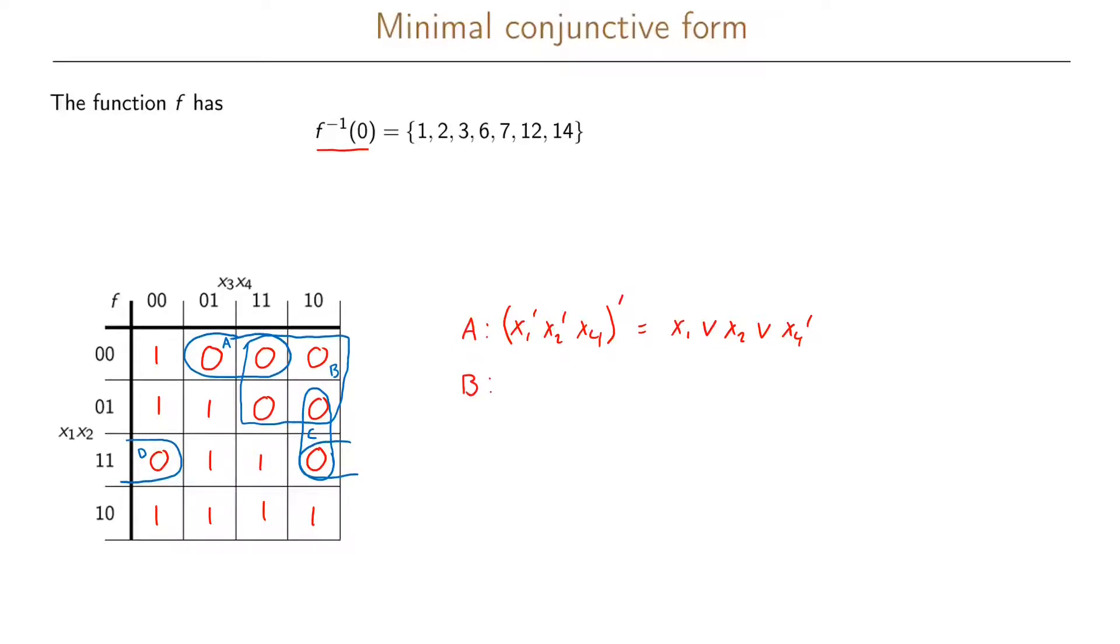Then for our next dual of an implicant we will have B which is x1 prime, x3. And again since we have a zero in our Karnaugh map we have a prime here. So this can be written using De Morgan's law as x1 or x3 prime.